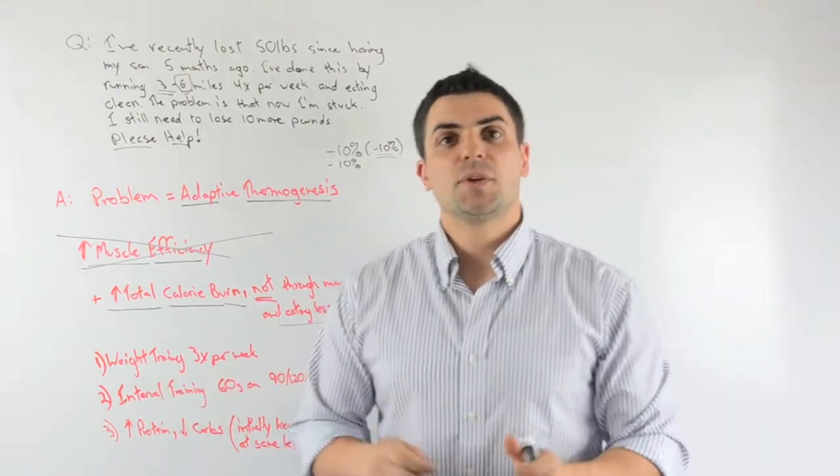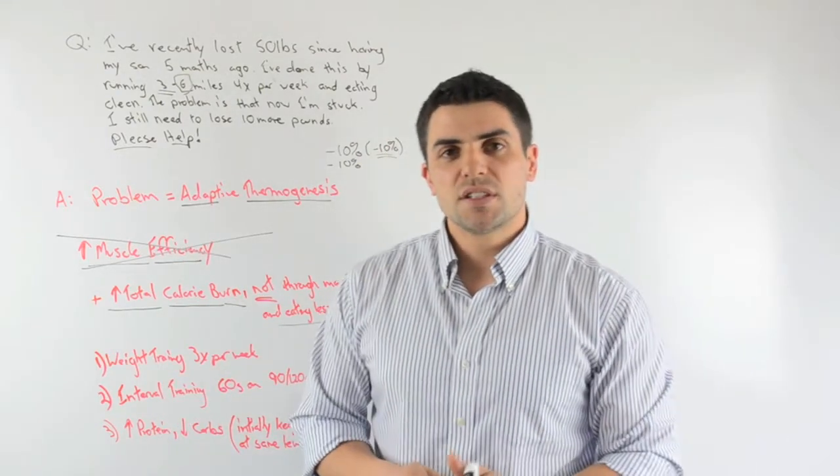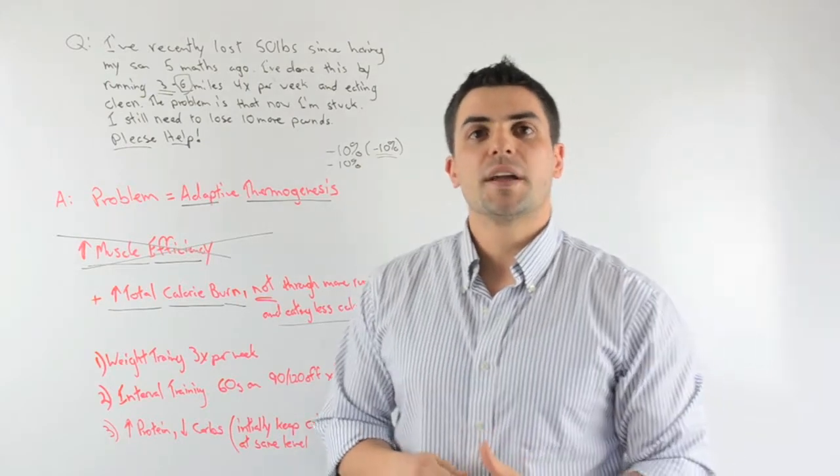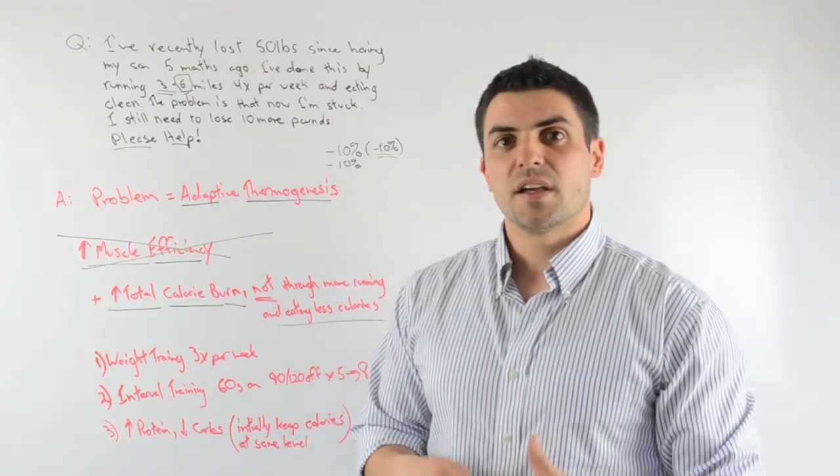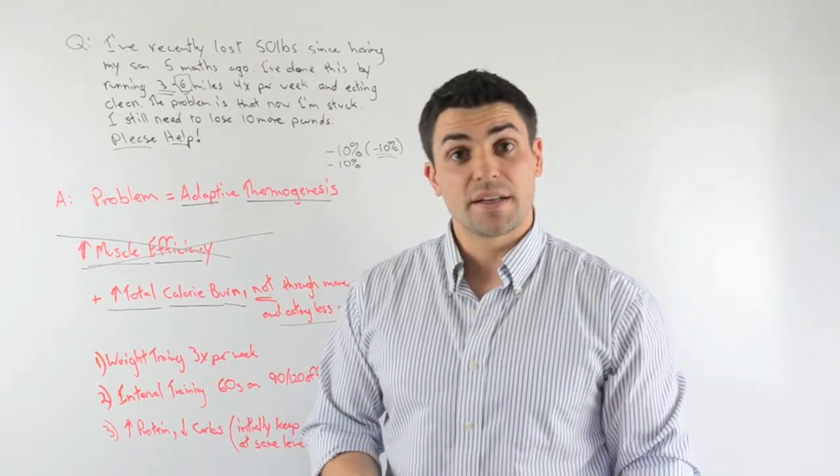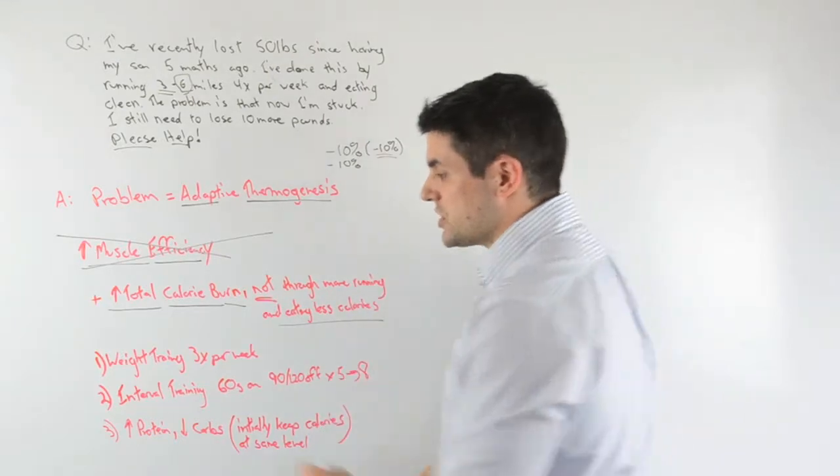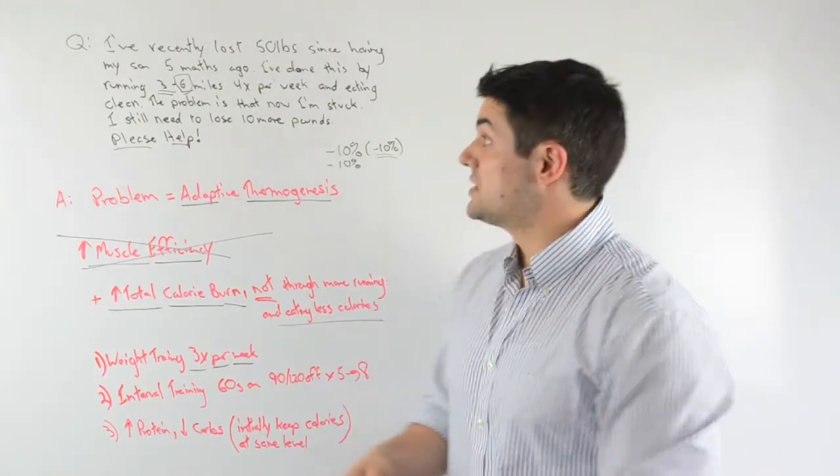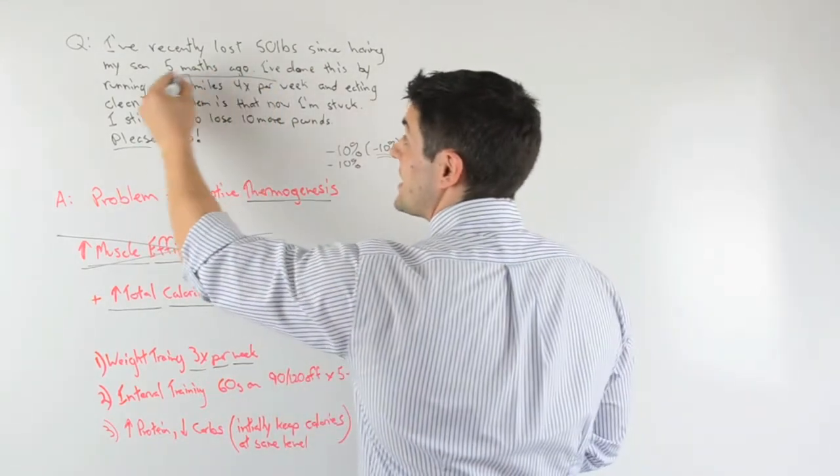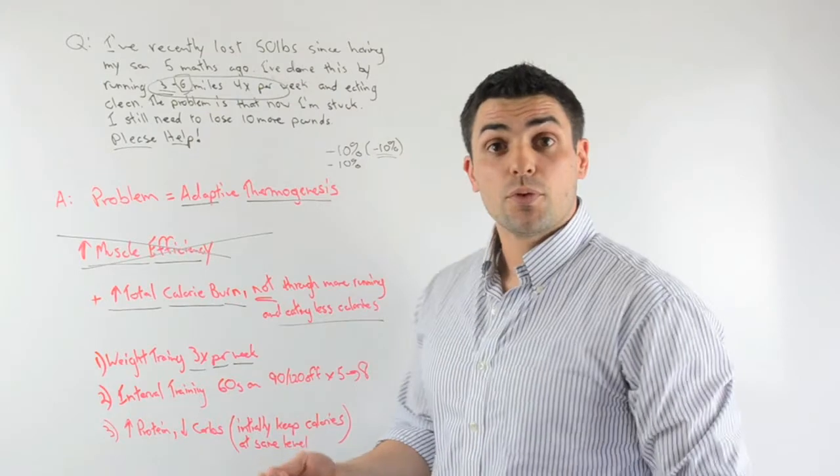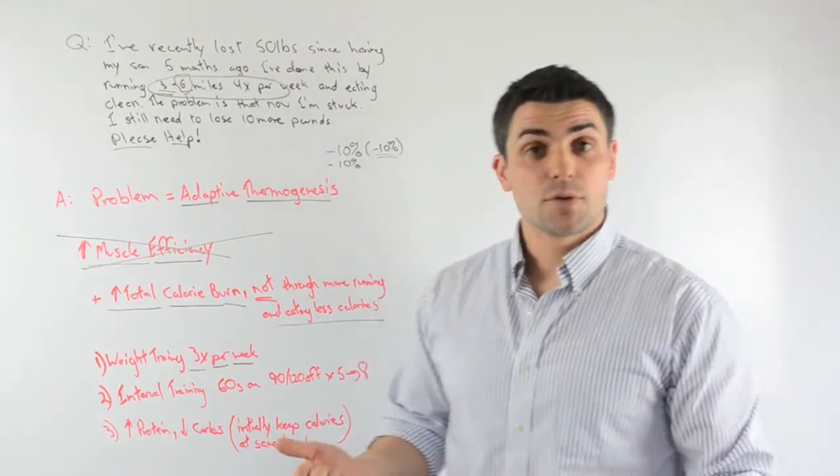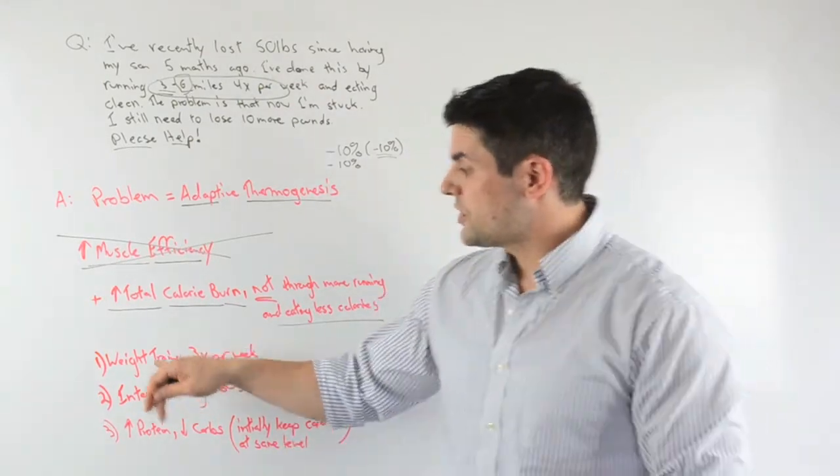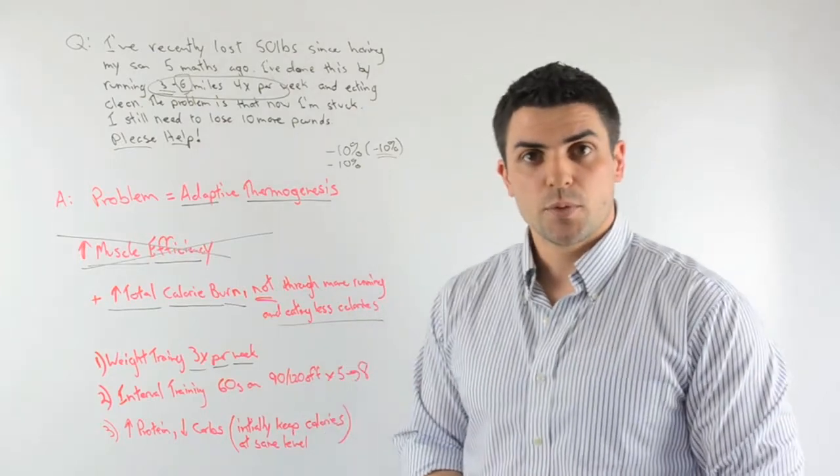The first thing is to switch to resistance training. Resistance training is much harder for your body to adapt to from a metabolic, calorically burning perspective. So switch to something three times per week, full body workouts. The good news is this is probably going to be less exercise than what you were doing previously, right, from a time perspective. But we move to three full body sessions three times per week, right?